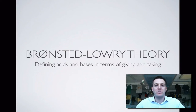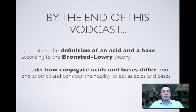Hello, and welcome to this film about Bronsted-Lowry theory. If you've seen the introduction to acids and bases, you'll see that this is kind of like an update almost to Arrhenius' theory. So hopefully by the end of this film, you'll be able to define acids and bases in a slightly different way to the way that Arrhenius defined them, and also you'll understand what a conjugate pair is and why one member of that pair will always be an acid and the other one a base.